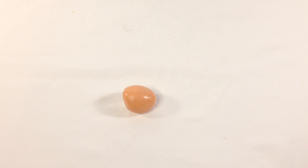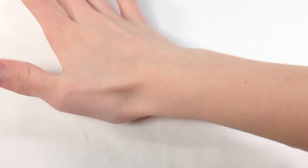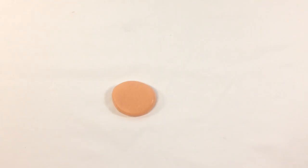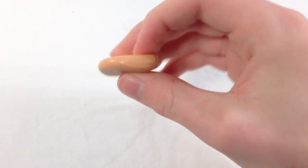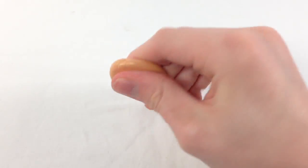Malleability is when an object can be deformed under pressure, such as being hammered or rolled out. So if I just smash it down like this, I deformed it. It's no longer a ball, it's more like a pancake.